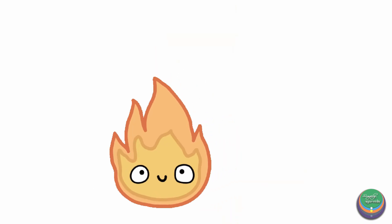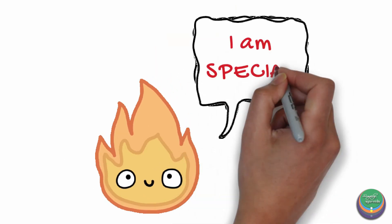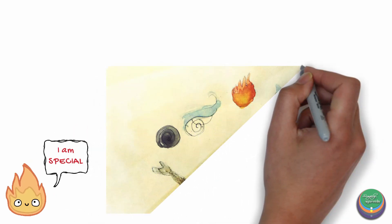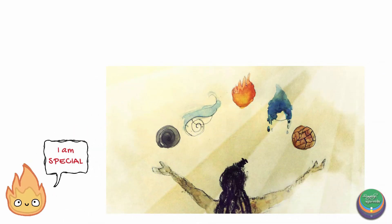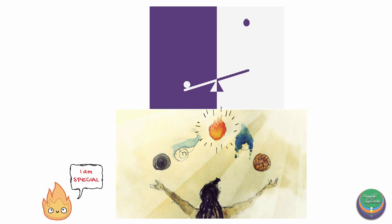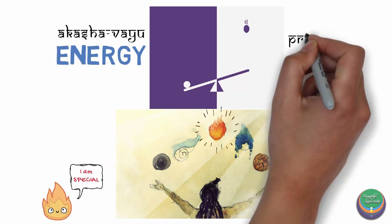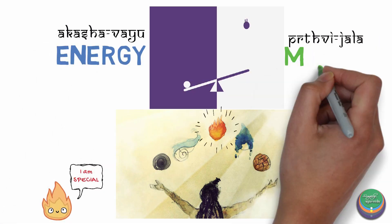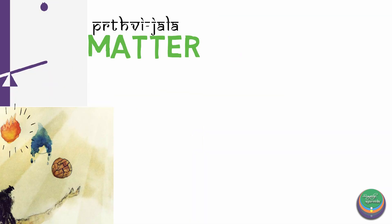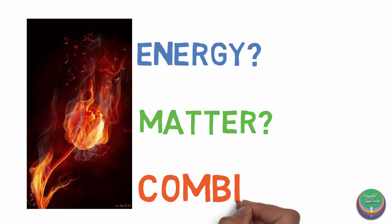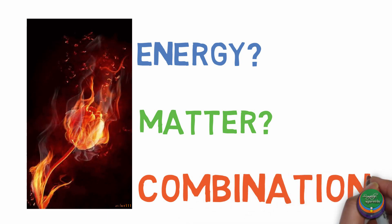Agni is revered to be special among the Panchamahabhutas due to its position among the five. It lies in the dead middle and acts as the fulcrum between Akasha and Vayu — that is, energy — and Prithvi and Jala — which is matter. So based on this, is Agni both energy and matter? Let's analyze this.